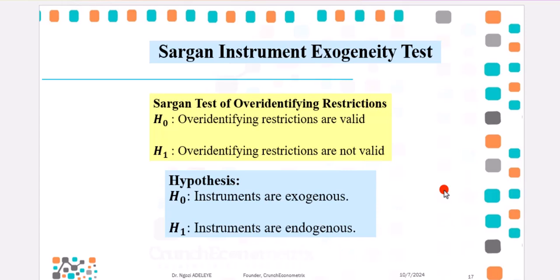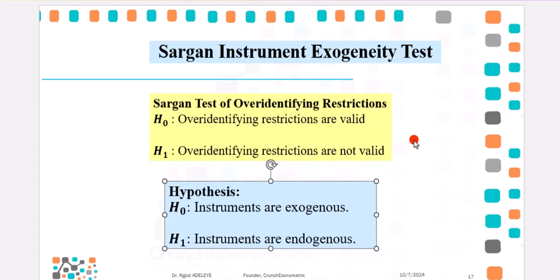There are two ways by which you can specify your hypothesis. Either you specify it as over-identifying restrictions are valid, which is a null hypothesis against the alternative that those restrictions are not valid, or you can simply specify it as the null hypothesis instruments are exogenous against the alternative that they are endogenous.